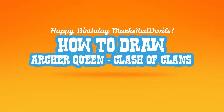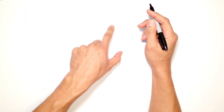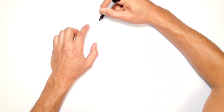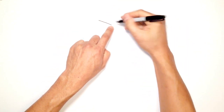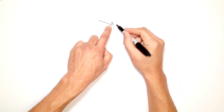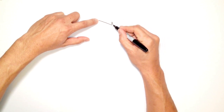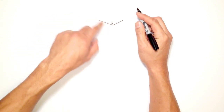Hey there. Today I'm going to teach you how to draw the Archer Queen from Clash of Clans. We're going to start at the top of her head with the bangs of her hair. The bangs come down in a V shape towards the middle of her nose. Starting on the left side, I'll come down towards the center of her face. In the middle, I'm going to draw a little notch like an upside-down V, and bring this line back up to the same height. There are the bangs.